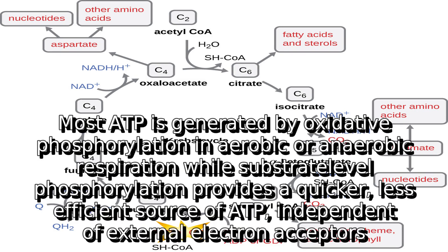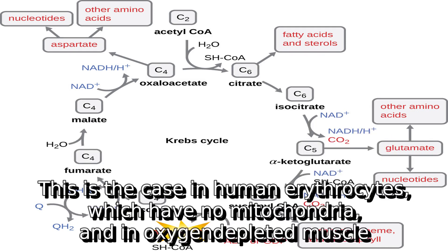Most ATP is generated by oxidative phosphorylation in aerobic or anaerobic respiration, while substrate-level phosphorylation provides a quicker, less efficient source of ATP, independent of external electron acceptors. This is the case in human erythrocytes, which have no mitochondria, and in oxygen-depleted muscle.